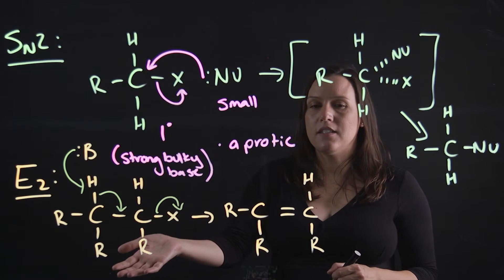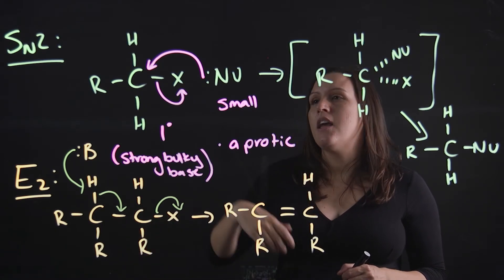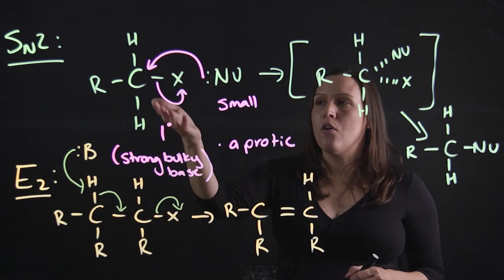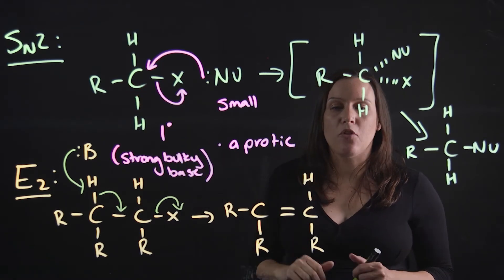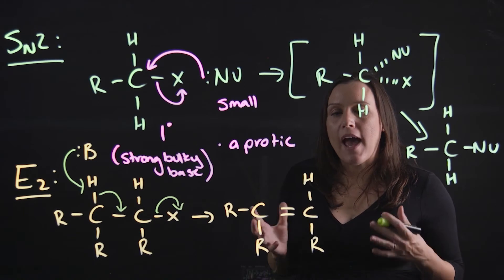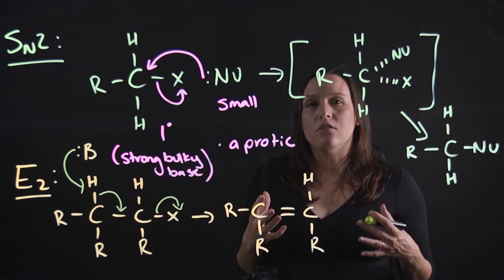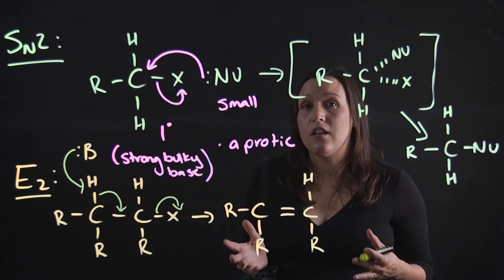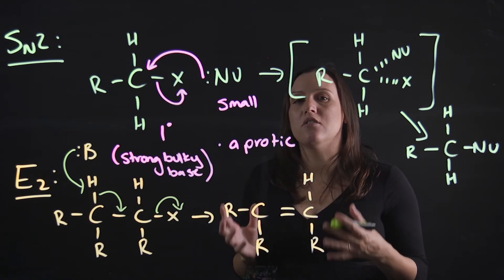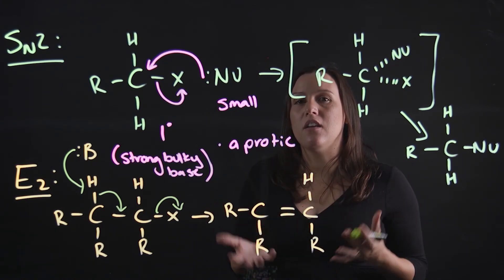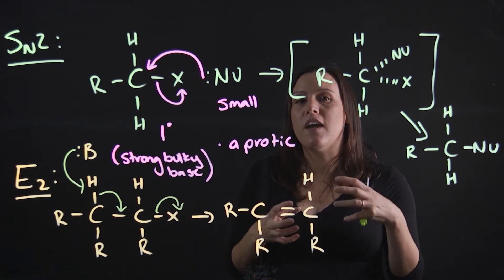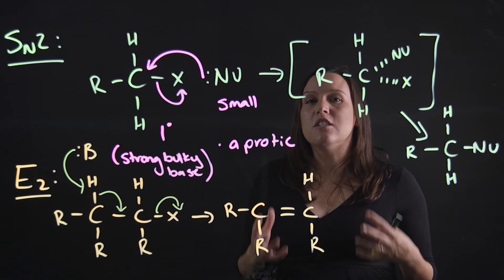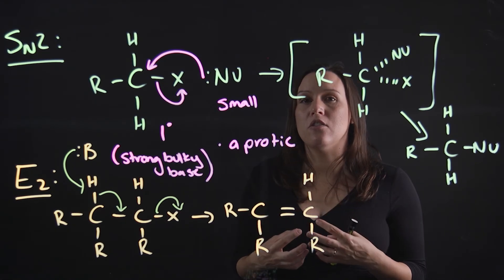So strong bulky base, aprotic solvent, and small nucleophile primary carbon, and again aprotic solvent. So remember aprotic solvent does not shield the nucleophile. Aprotic solvent solvates the nucleophile. So it's protic, so it's positively charged. It solvates that negatively charged nucleophile, and it stops it from being able to do what it needs to do.